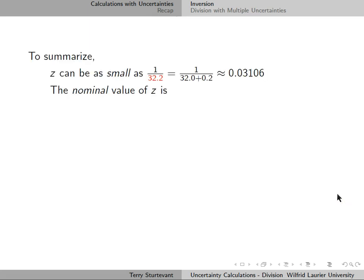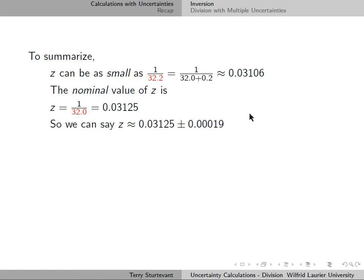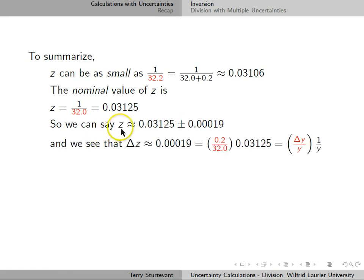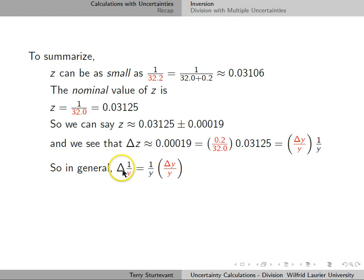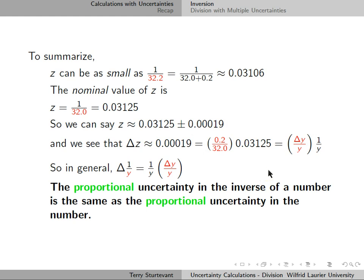The smallest value and the nominal value is simply 1/32.0. So we can say that the inverse is 0.03125 ± 0.0019. This value works out to be the ratio of 0.2 to 32, so the uncertainty in the inverse is the proportional uncertainty in the quantity times the inverse. In general, the uncertainty in 1/y is (1/y) × (Δy/y). The proportional uncertainty in the inverse of a number is the same as the proportional uncertainty in the number.